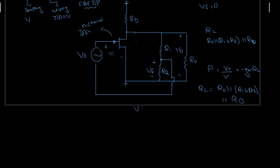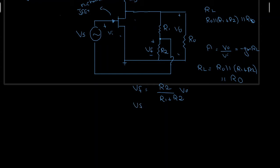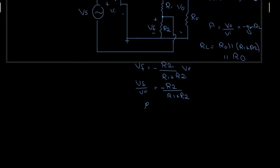When we connect the feedback, the feedback voltage is equal to Vf = R2 divided by (R1 + R2) times V0, which means Vf/V0 = R2/(R1 + R2). Because we have negative feedback here, I place a negative sign. This Vf/V0 is actually equal to beta, so beta = minus R2 divided by (R1 + R2). Let us call this equation A.